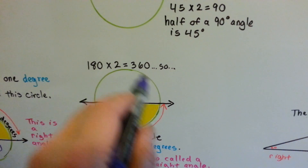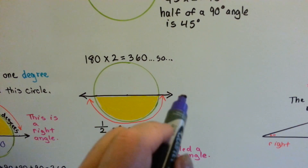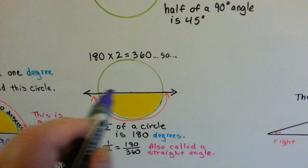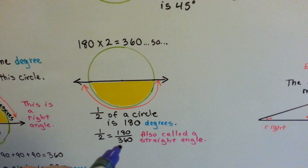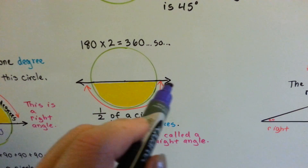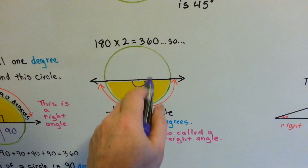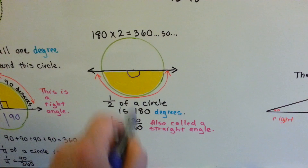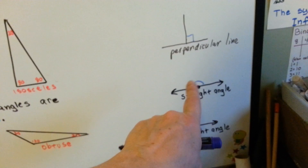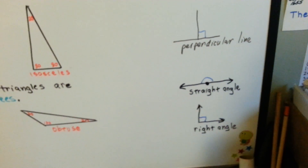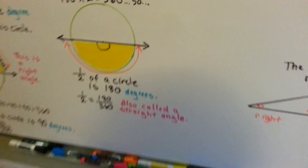Because the whole circle is 360, half of it would be 180 degrees. It would make a straight line — half of it is 180 degrees, it's 180 over 360 parts. This is also called a straight angle, because they actually measure the angle and how open it is. I've got a right angle and I've got a straight angle right here. It's so open that it laid flat at 180 degrees — it's like two right angles opened up. So that's a straight angle.